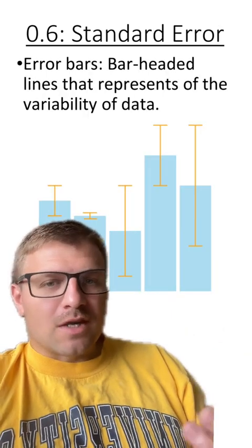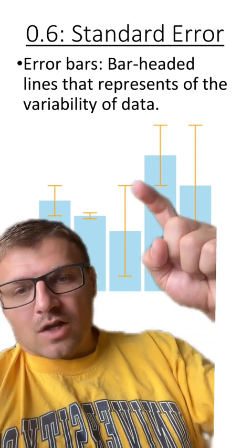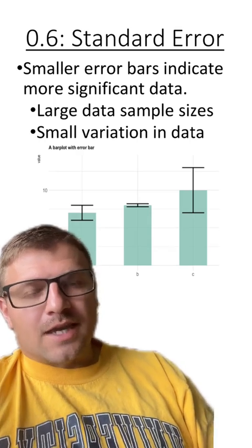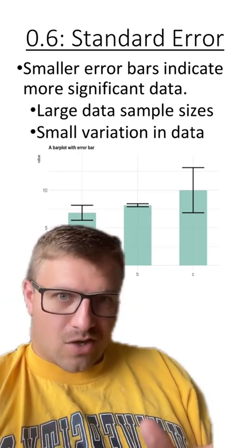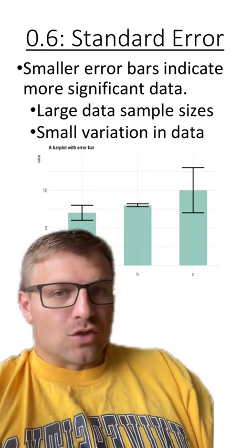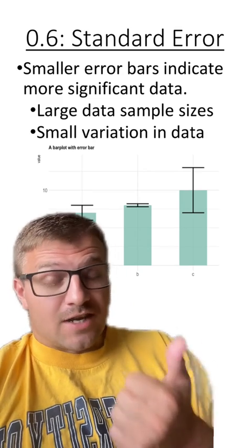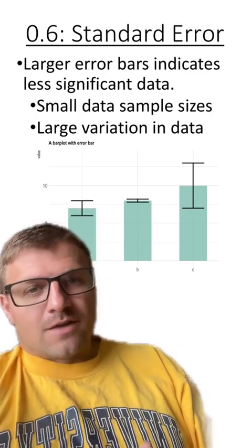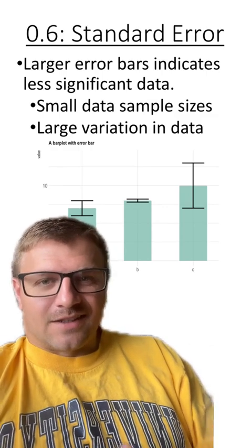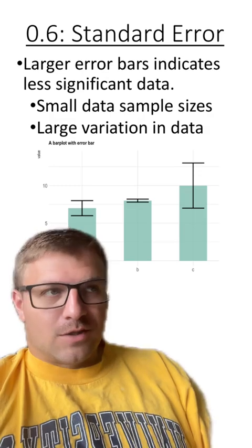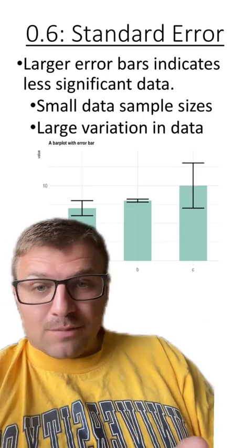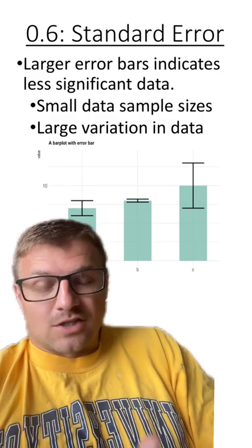Now, when looking at these error bars, you might have noticed that some of the error bars are very large, while some are very small. Smaller error bars indicate more significant data generally. This is usually due to two reasons. One is they have a large data sample size, and two, there's small variation in the data. Larger error bars, on the other hand, indicate less significant data generally. This could be due to two reasons, or both of these reasons: they had small data sample sizes or large variation in their data.